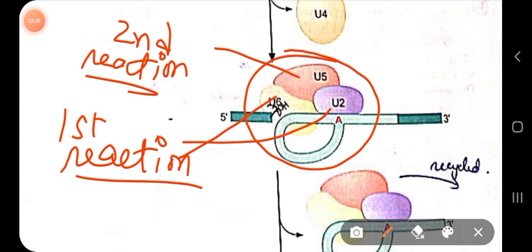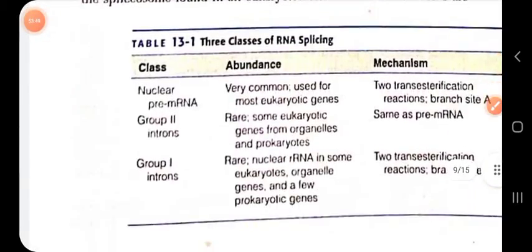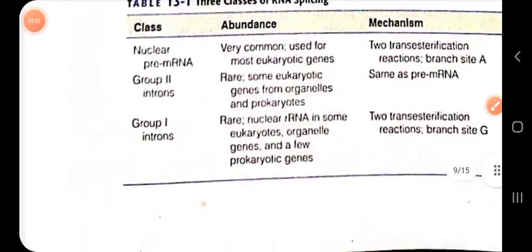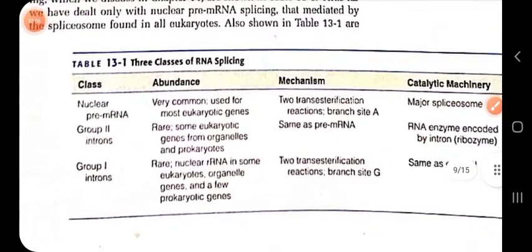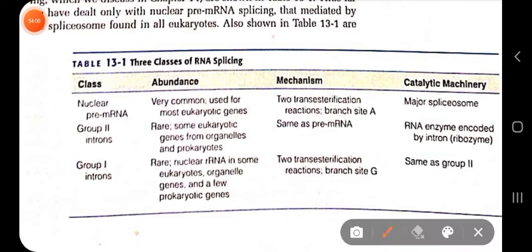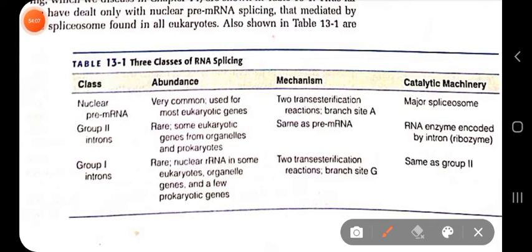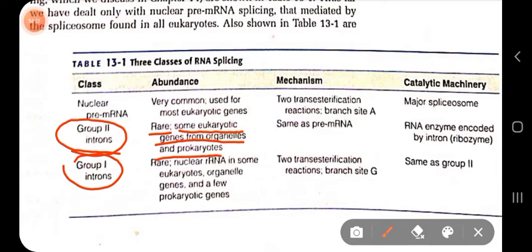This is all about the spliceosome-mediated splicing process. In the next class, I will discuss self-splicing — which proteins mediate self-splicing. Introns have been categorized into different types: Group 1 introns and Group 2 introns. Group 2 introns are very rare in nature, found in some eukaryotic genes from organelles and prokaryotes. Group 1 introns are also very rare, found in nuclear rRNA in some eukaryotes, organelle genes, and a few prokaryotic genes.